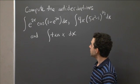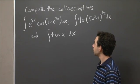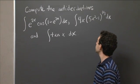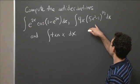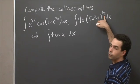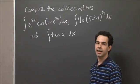So the first one is e to the 2x times cosine of the quantity 1 minus e to the 2x dx. The second one is 4x times the quantity 5x squared minus 1 raised to the 1 third power. And the third one is tan of x dx.